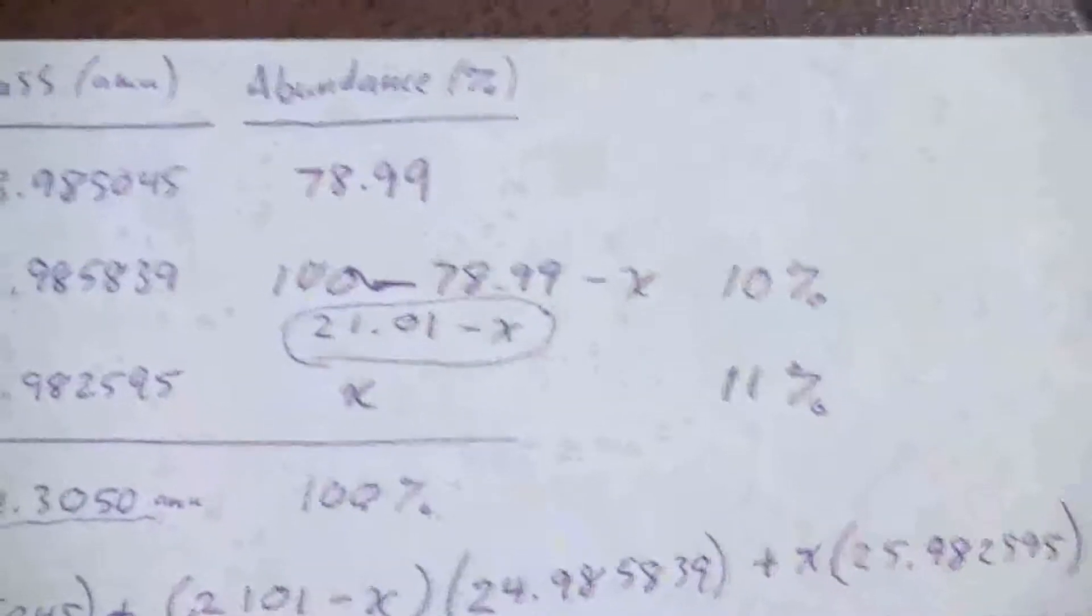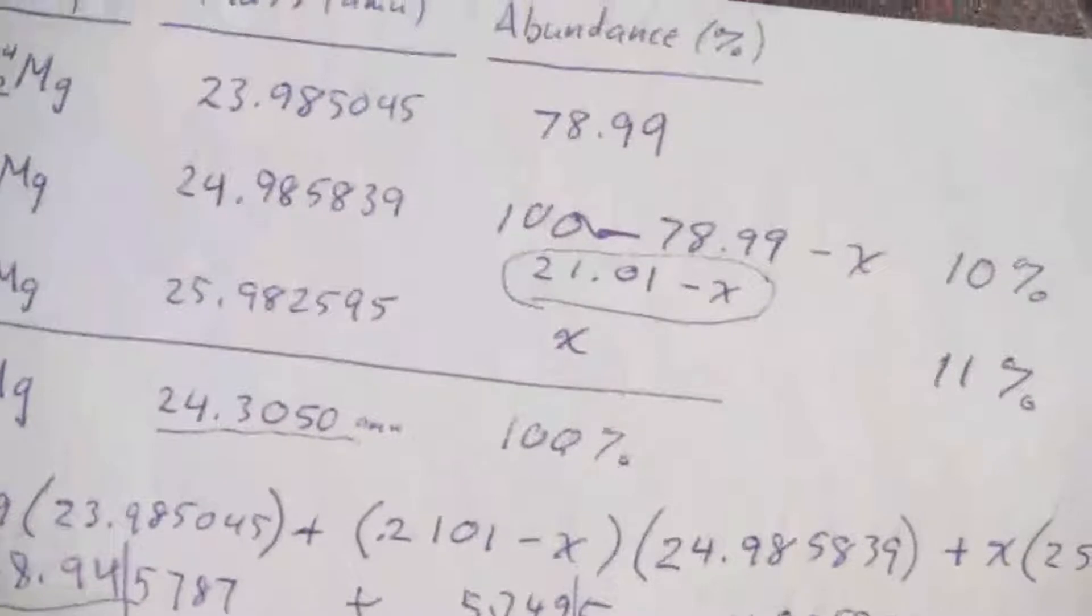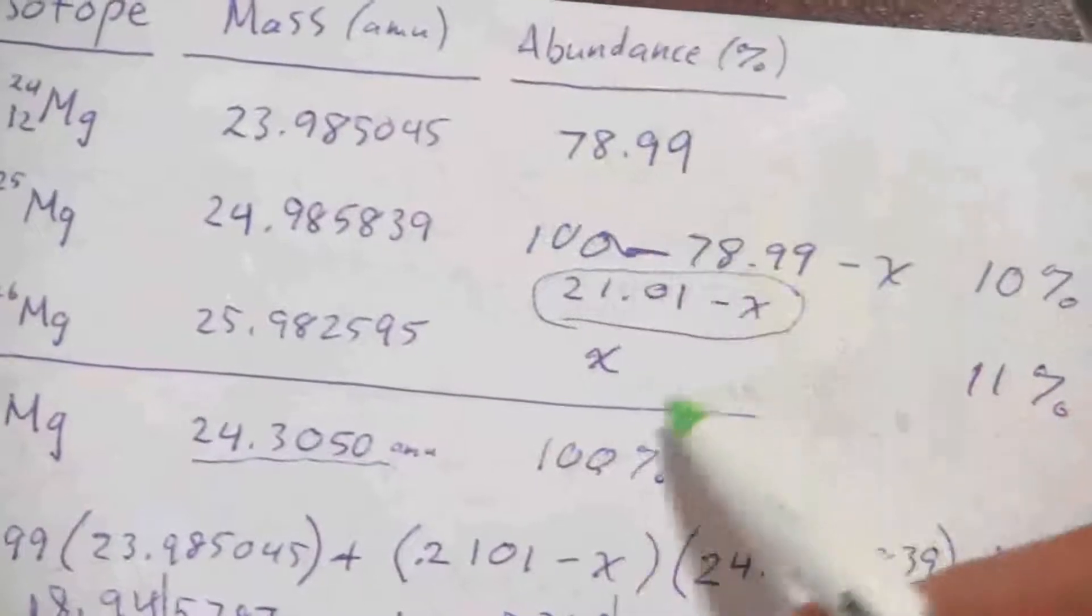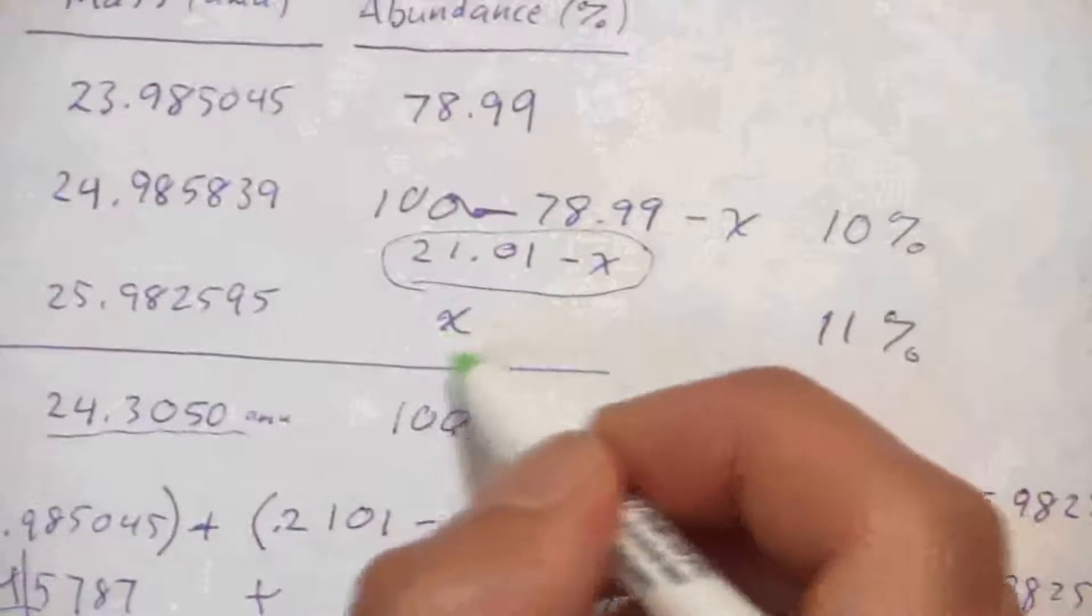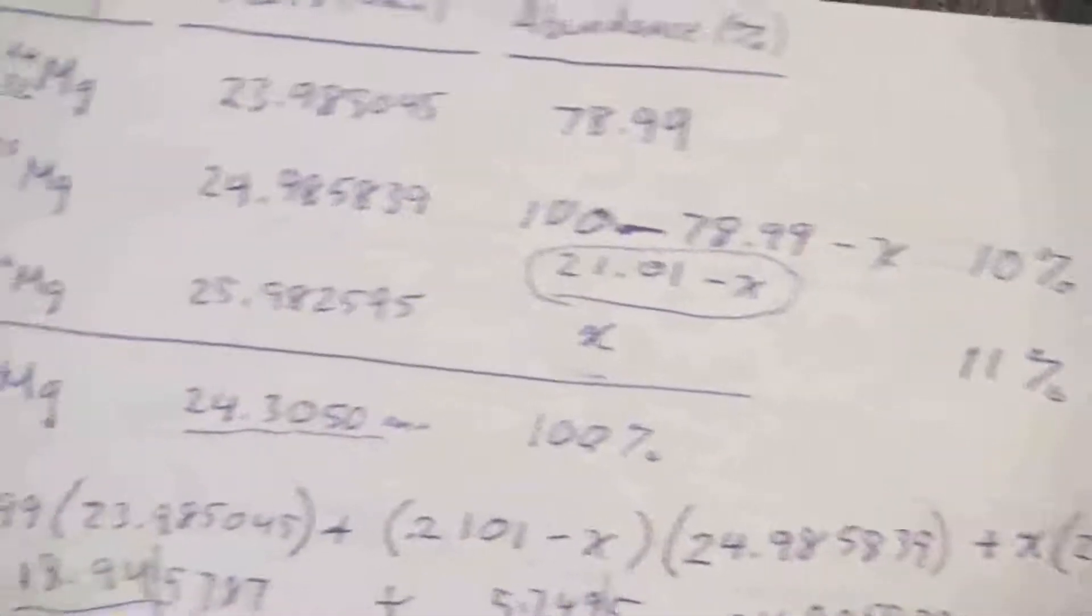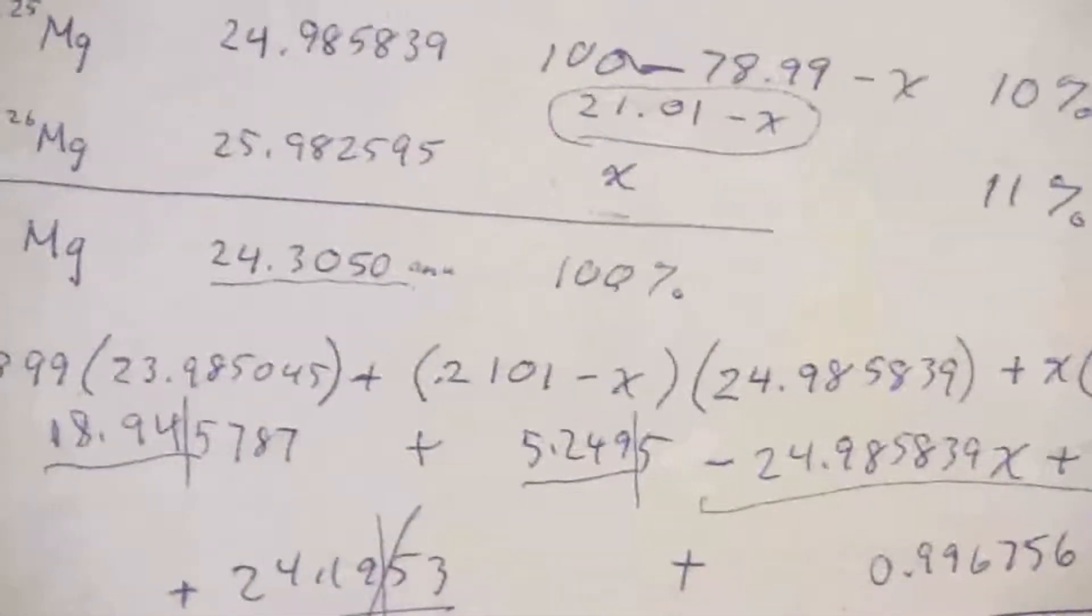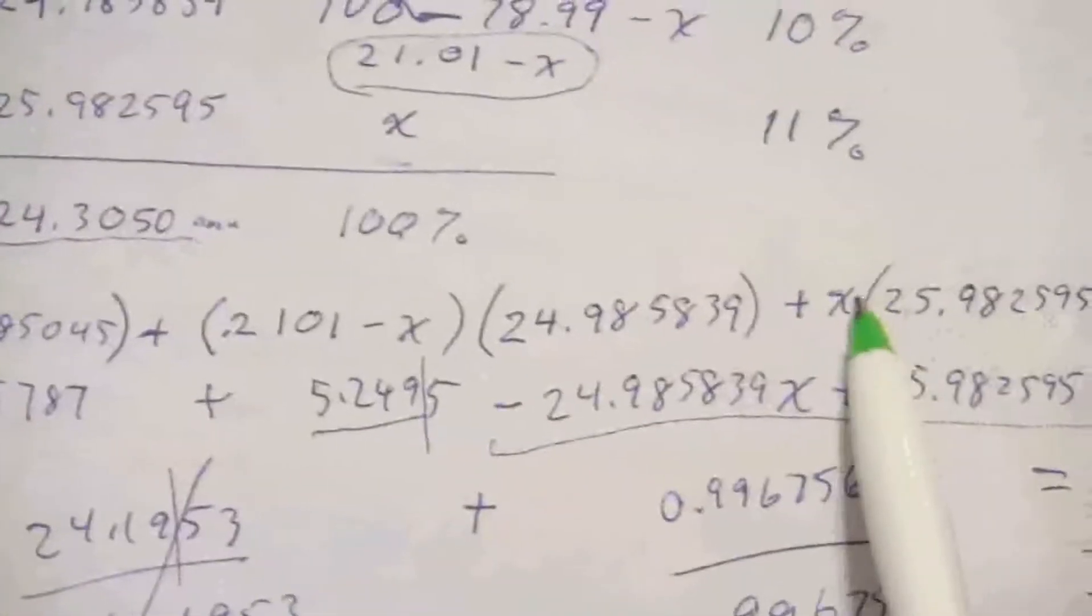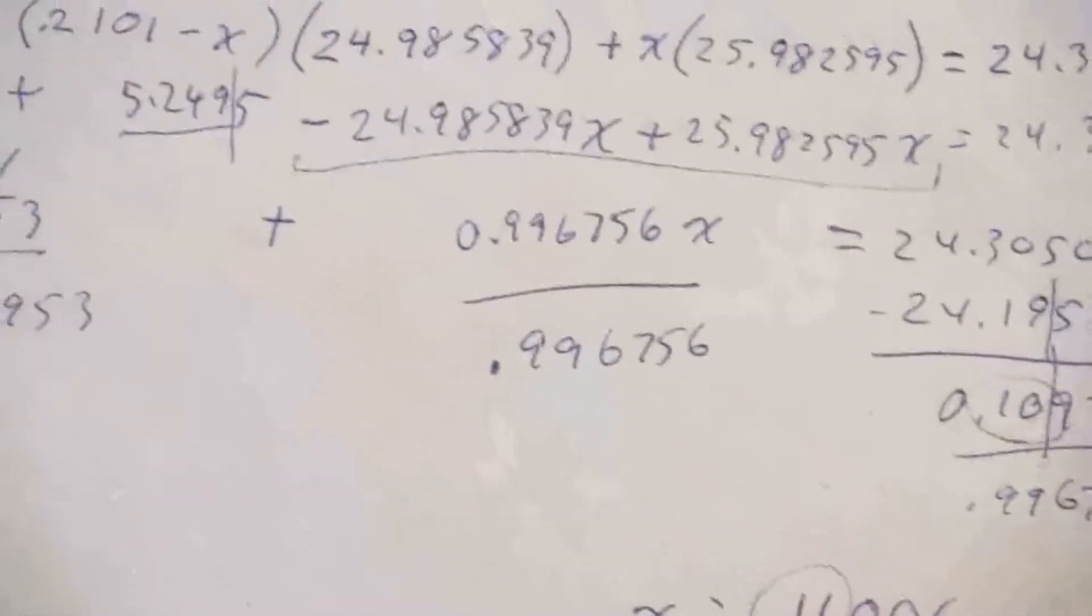So a lot of algebra here, but this is how you would set up these types of problems where you're given the abundance of one of the isotopes and you want to find the abundance of the others, or one in particular. You just let that one be the x. Just don't forget to divide that by 100, so you're doing everything in fractional form, in the form of decimals, and that will save a little bit of effort in the calculation.